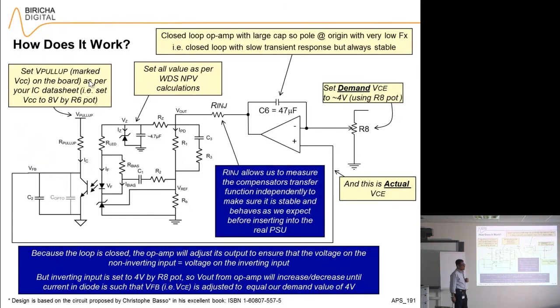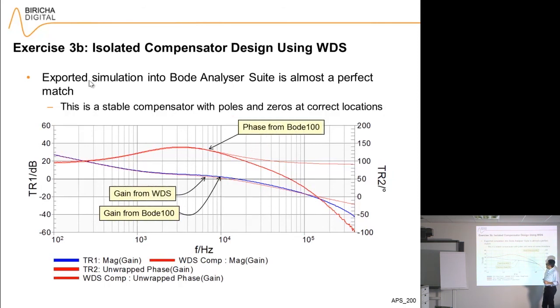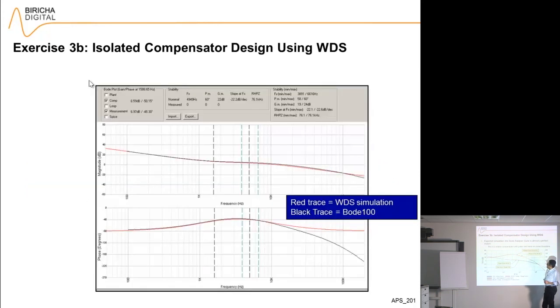Finally, we can inject with the Bode and measure. When I measure the loop, this is the result I got from Bode 100 versus the simulation from WDS. Here the red trace is simulation from WDS of the compensator and the blue trace and thicker red trace is the actual measurement. You see that I've got an excellent fit up to about 10 kilohertz, after which the simulation phase fails because the bandwidth of the opto kicks in. That's the gain from Bode, that's the gain from WDS, that's phase from Bode, that's phase from WDS. You can import from Bode into WDS. The black trace is the measurement from Bode, the red trace is the isolated compensated WDS design. That's the simulation and you can see we've got an almost perfect match.